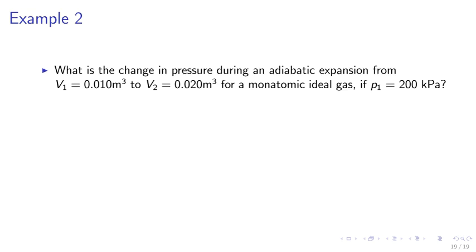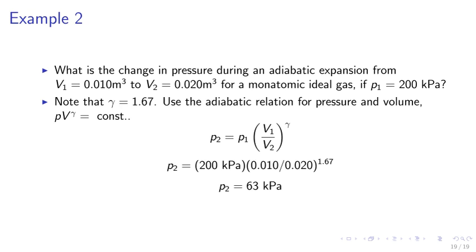Example 2. What is the change in pressure during an adiabatic expansion from V1 equals 0.010 meters cubed to V2 equals 0.020 meters cubed for monatomic ideal gas if P1 equals 200 kPa? Note that gamma equals 1.67. We use the adiabatic relation for pressure and volume: PV gamma equals constant. So we obtain P2 equals 200 kPa times (0.01 divided by 0.02) to the power of 1.67. And you get P2 equals 63 kPa.